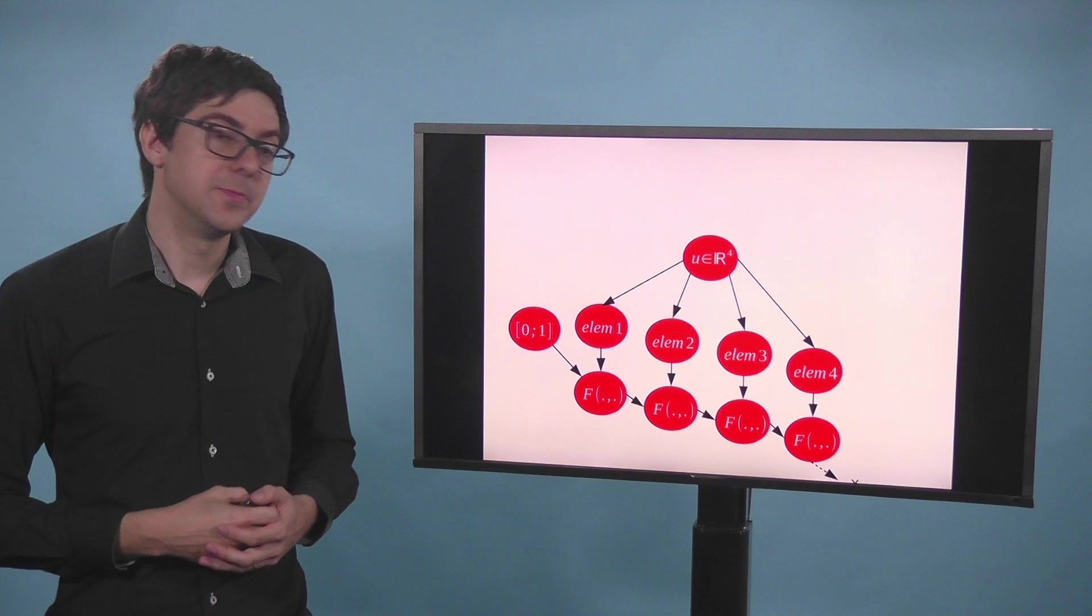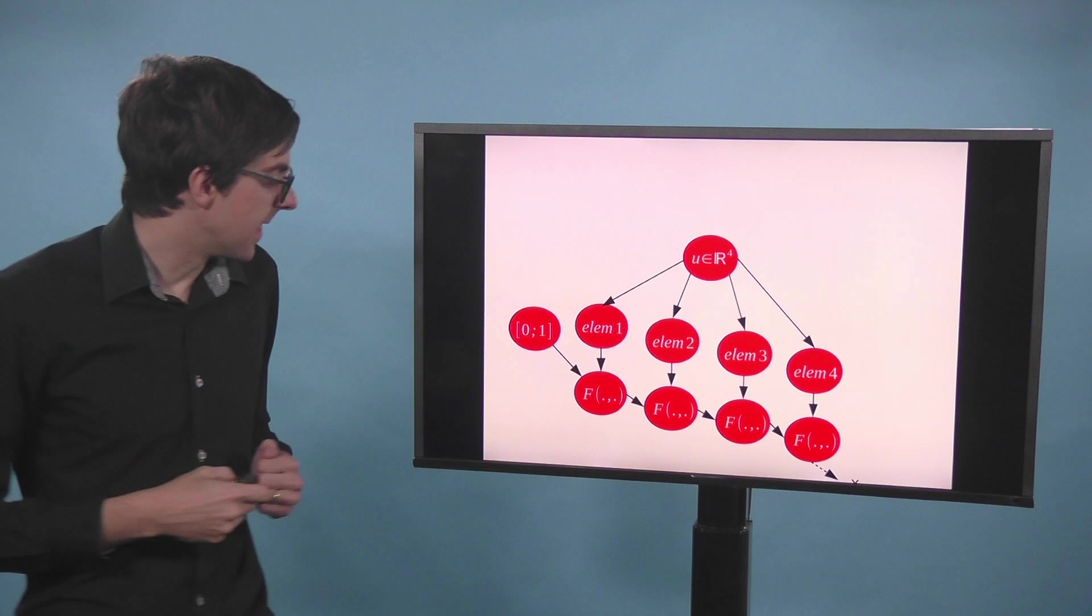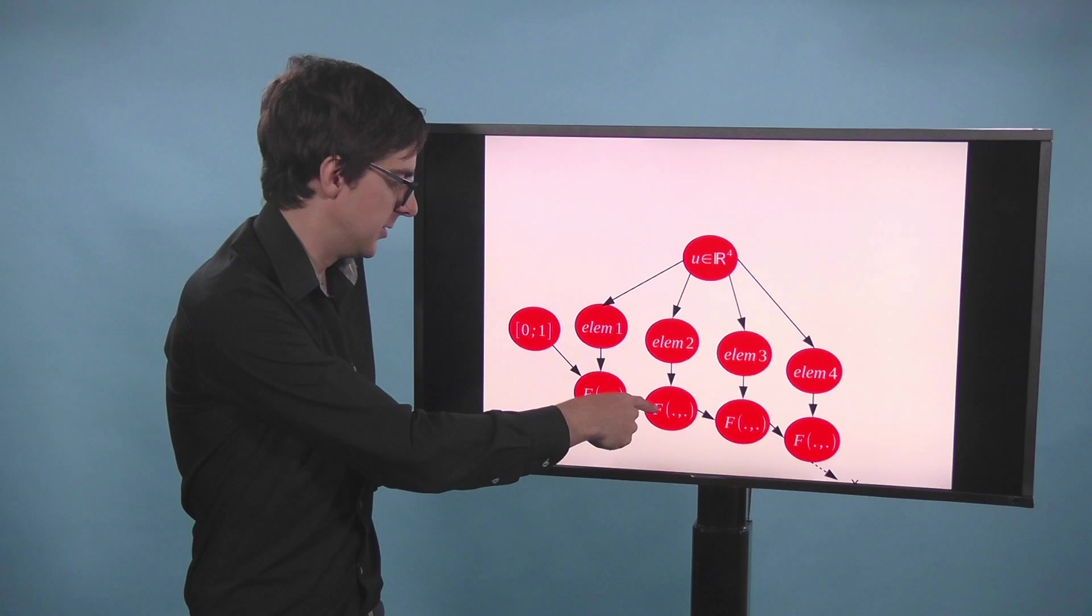And using the control input, the first control input, we can propagate it to the next time step. Then we have state at time t equals 1. We give it as input to another state propagation block and so on.